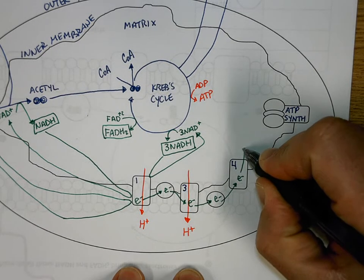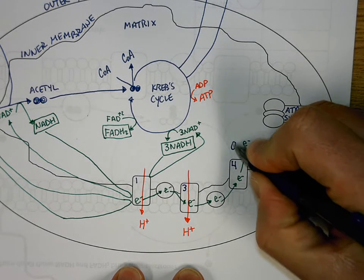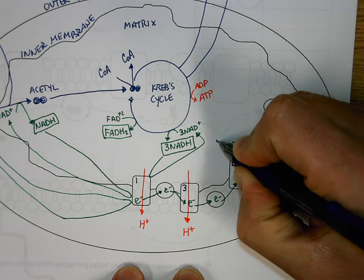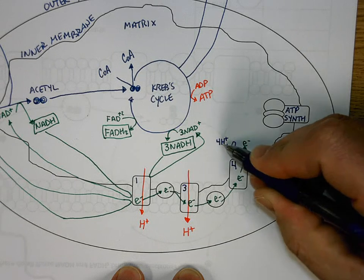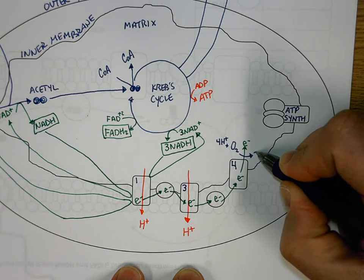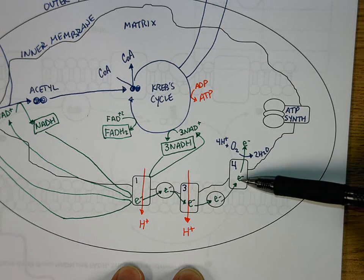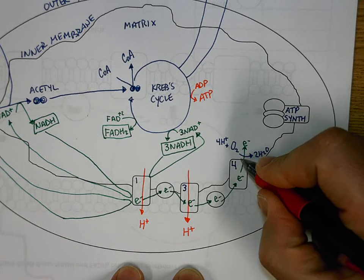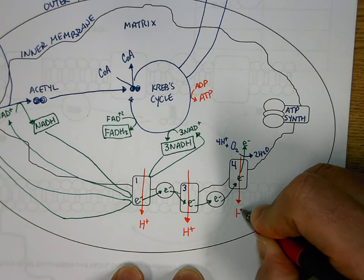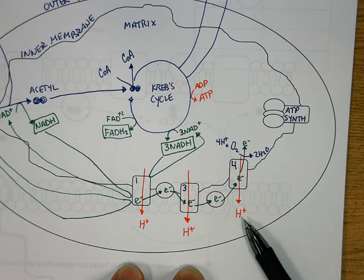Well, it's going to go out here into the matrix, and as we learned in class, it's going to be picked up by oxygen gas. And with the help of those electrons, 4 hydrogen ions and oxygen gas, we'll make 2 molecules of water. And as long as there's oxygen gas here to pick up these electrons, electrons will continue to flow through the electron transport chain. And when electrons continue to flow through the electron transport chain, hydrogen ions will continue to be pumped into the intermembrane space.